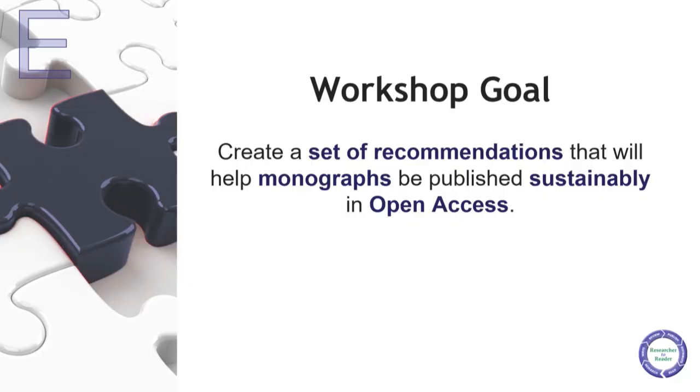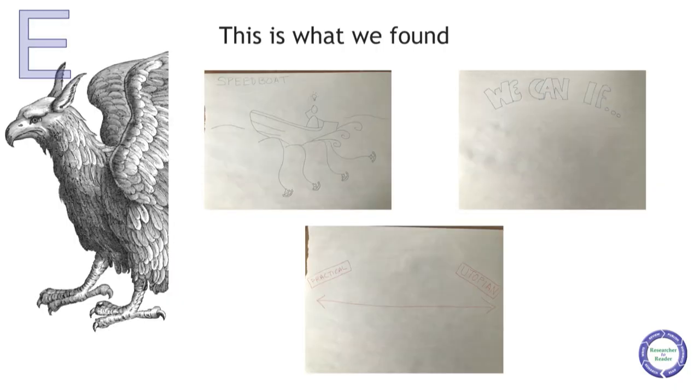Next, to talk about OA books, we have Stephanie Palvast. We were Workshop E, focused on open access books, and the goal of our workshop was to create a set of recommendations that will help monographs be published sustainably in open access. We tackled this goal via three exercises set for groups in the spatial chat and in the room.